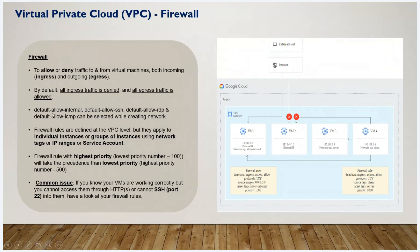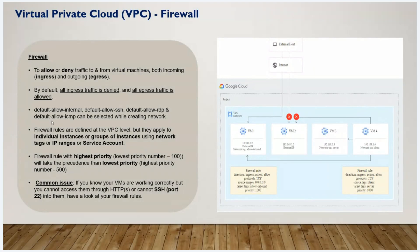There are default firewall rules. 'Default allow internal' means internal services within the same network can communicate. 'Default allow SSH' means you can enter a Linux-based virtual machine using SSH. 'Default allow RDP' — Remote Desktop Protocol — means you can enter a Windows-based virtual machine. 'Default allow ICMP' means the ping command is allowed. These default firewall rules are created automatically when a network is created.